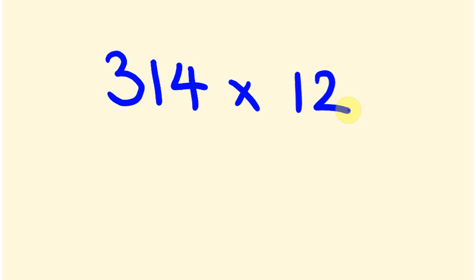Okay, so say you were asked to multiply the following number by 12: 314 times 12. Now, the way that we do this is we're going to follow two simple rules, and these are as follows.